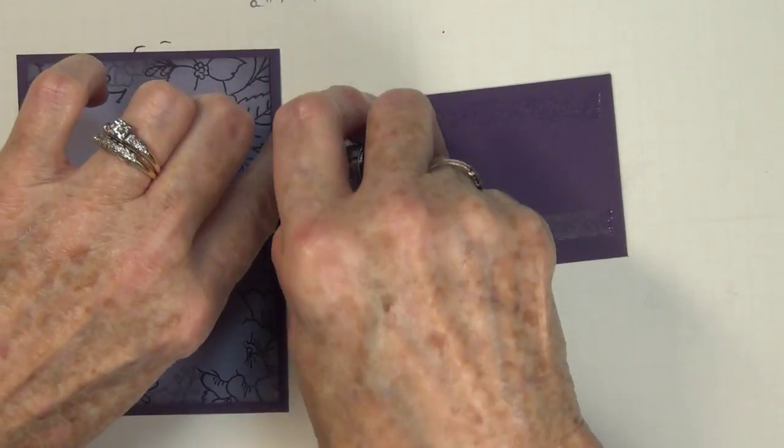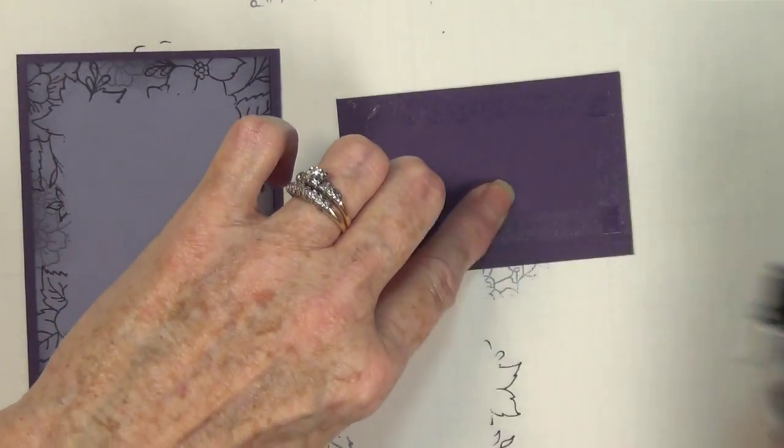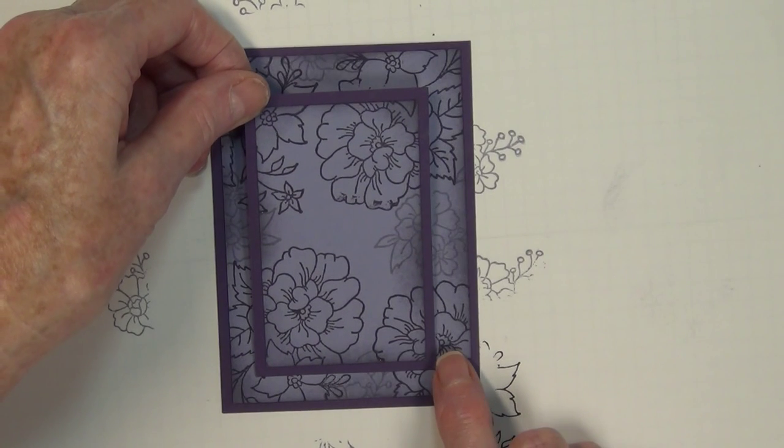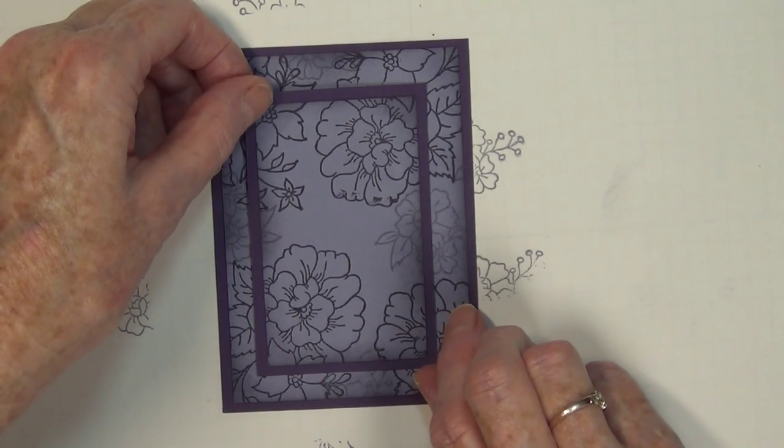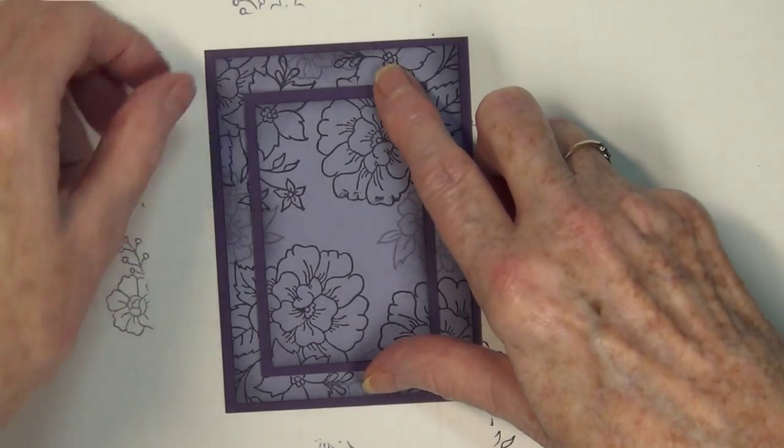Don't you think the Wisteria Wonder and the Elegant Eggplant really look beautiful together? I like purples and I don't use them a whole lot. Okay, looks good.